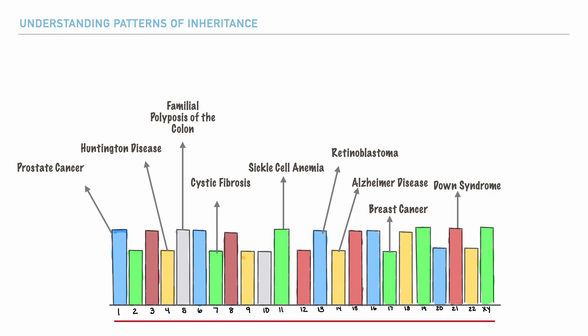And on the sex chromosome, number twenty-three, colorblindness and muscular dystrophy. Keep in mind that we've only highlighted a few of these conditions and that there are a host of other conditions linked to these chromosomes. In fact, there are multiple conditions matched to a single chromosome.